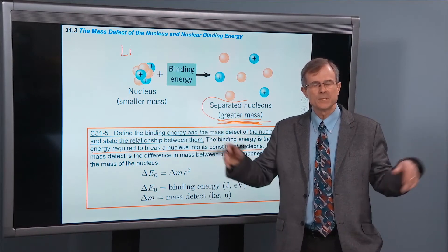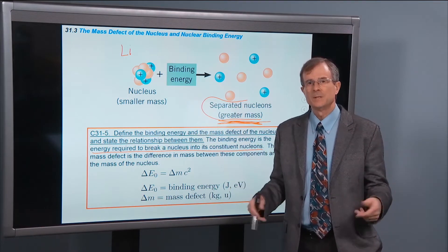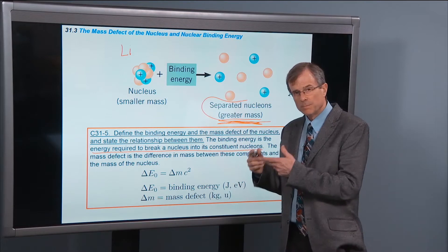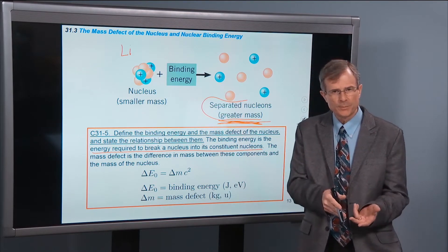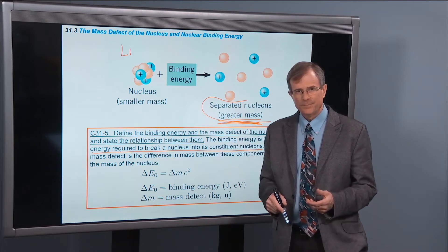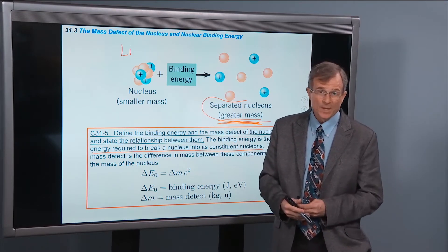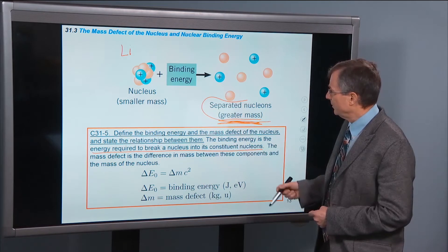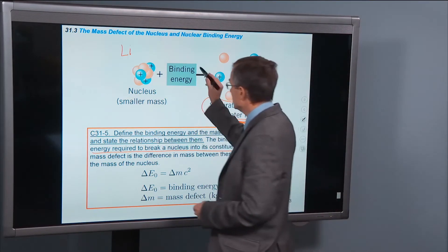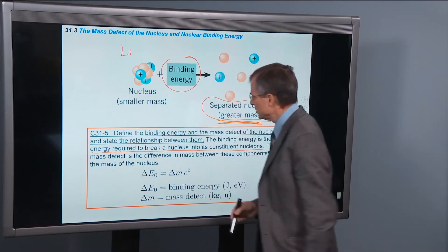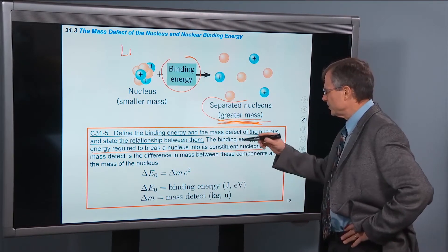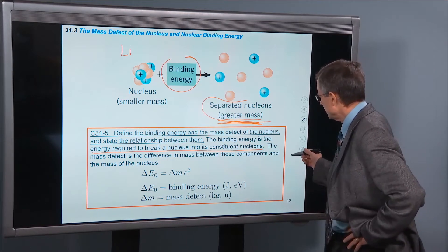This separated nucleus has a greater mass, and it's true for every nucleus. If you separate it into its components, the components weigh more — the total mass of the components is more than the mass of the original nucleus. The mass of the separated parts is not equal to the mass of the nucleus, and the difference is the binding energy.